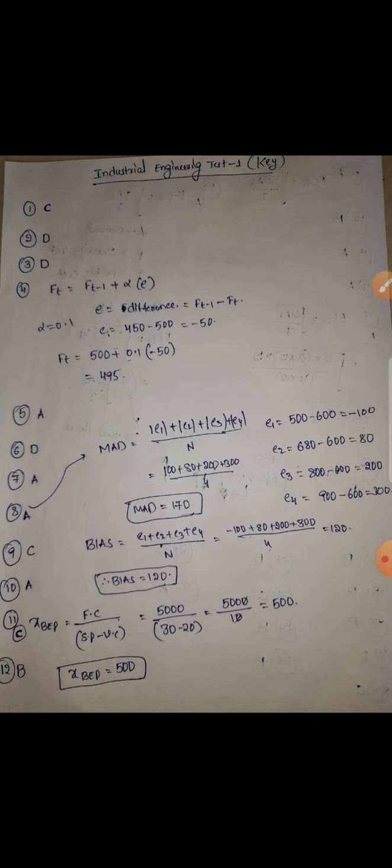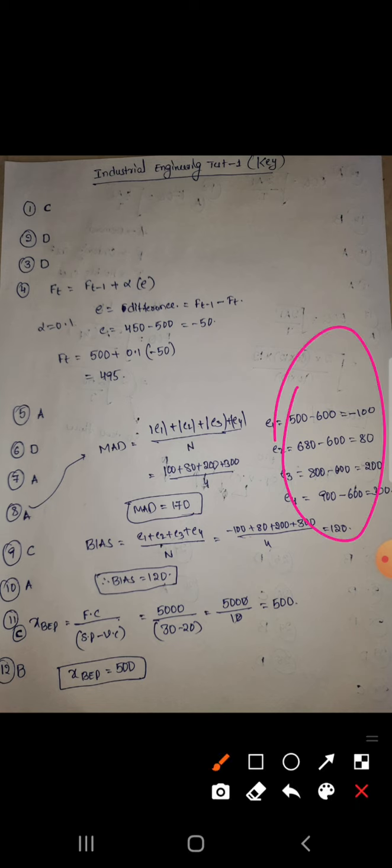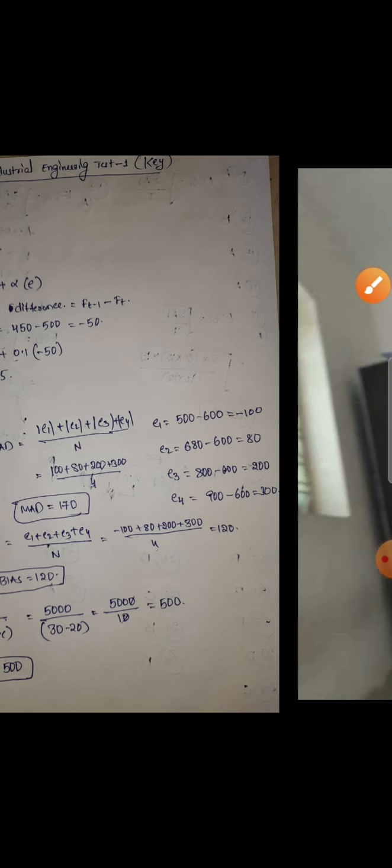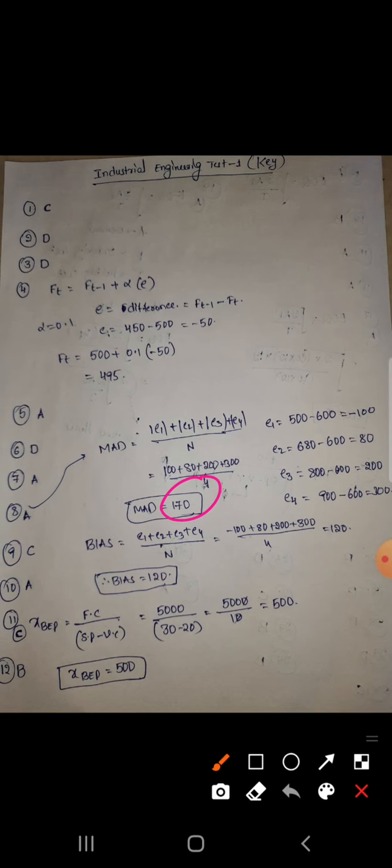Seventh one is A, that is Mean Absolute Deviation, measurement of forecast error. Eighth one: absolute deviation means the mod of e1, e2, e3, and e4. These are the differences between those four forecasts. Mean Absolute Deviation uses mod, so negative terms become positive. Minus 100 becomes plus 100, and you get 170.